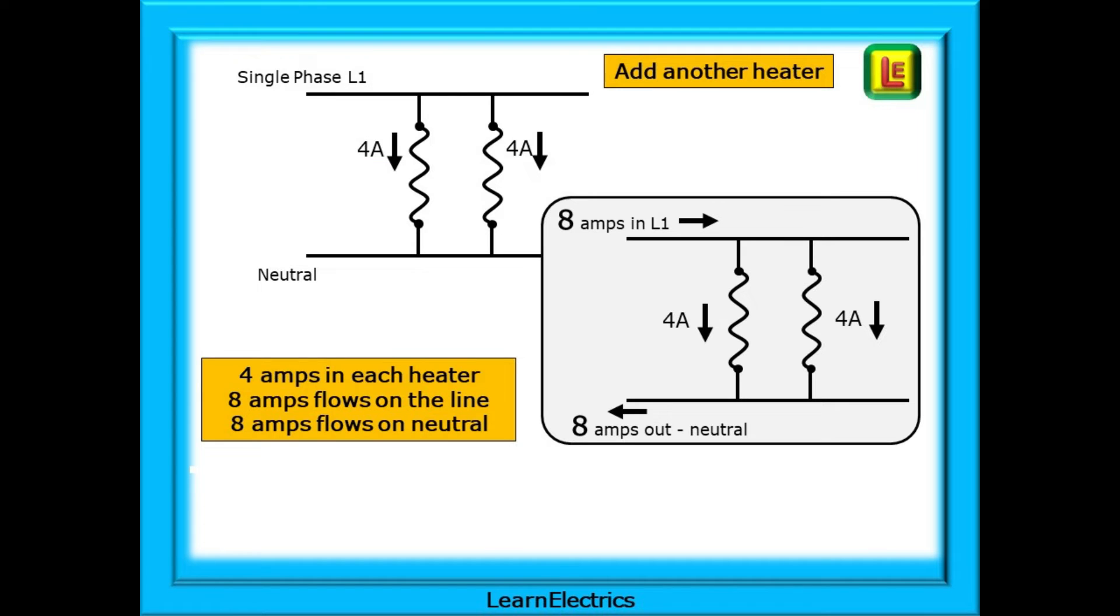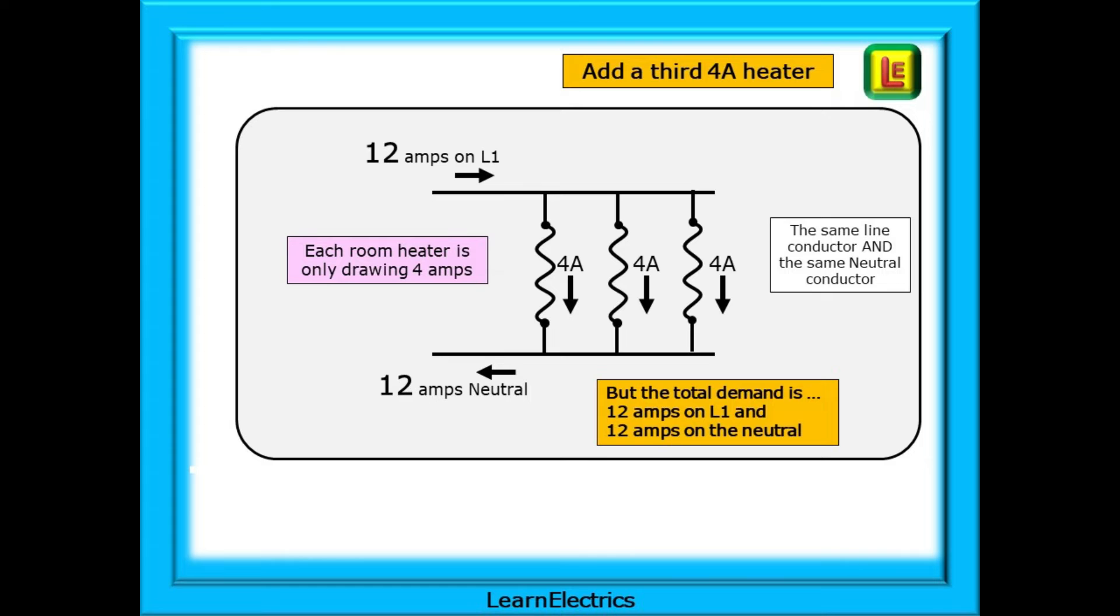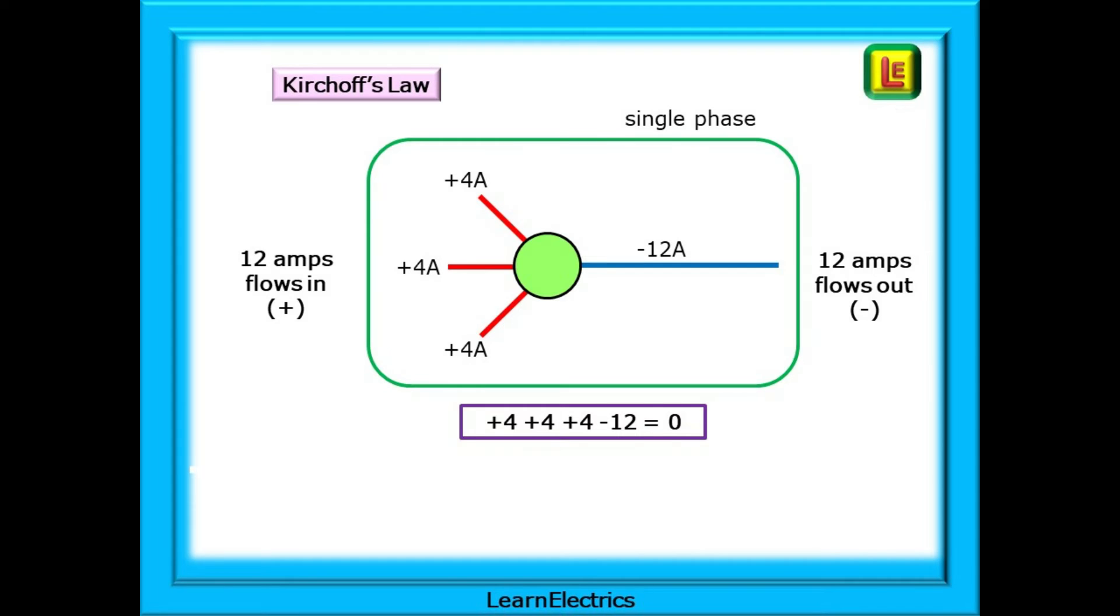We can add another 4-amp heater to our single-phase circuit. If 4-amps flows into each heater, 8-amps must flow along the line conductor. And if 8-amps flows through the two heaters, then 8-amps must flow along the neutral. Now add a third heater. 12-amps on the line conductor. 4-amps through each of the three heaters. And 12-amps back along the neutral. How would Kirchhoff draw this? 3 lots of 4-amps in and 1 lot of 12-amps out. That was single-phase. And Kirchhoff's law works just the same with three-phase.